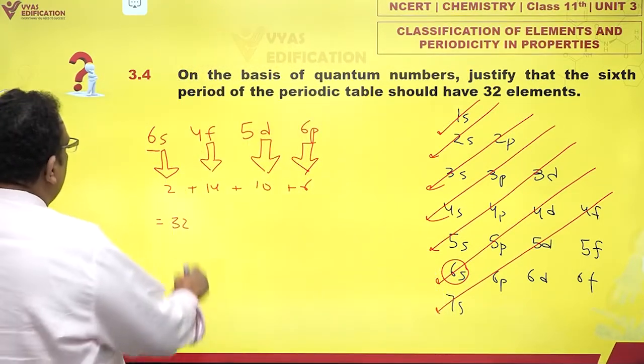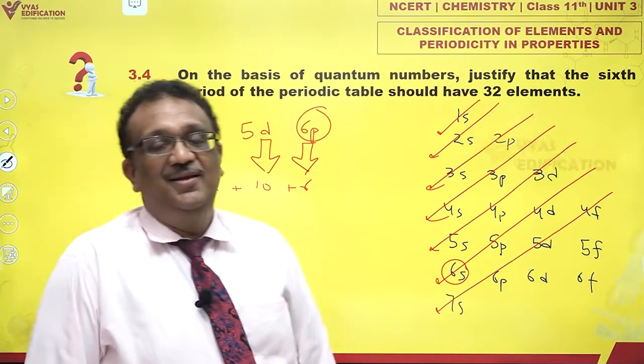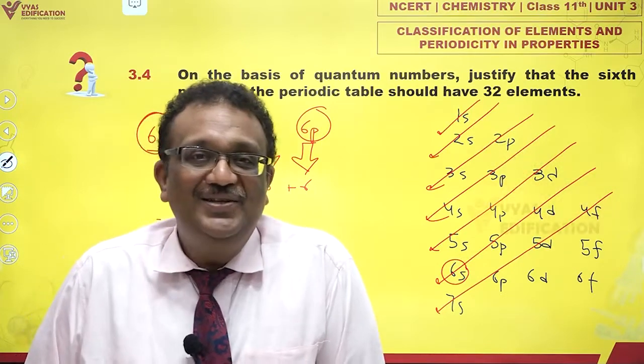Because the period of a periodic table is denoted by the principal quantum number of the beginning and ending sub-shells, which is 6s and 6p.